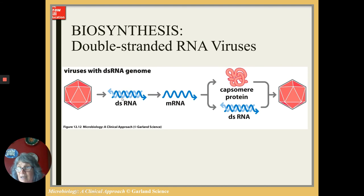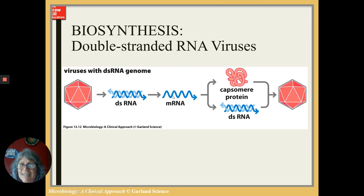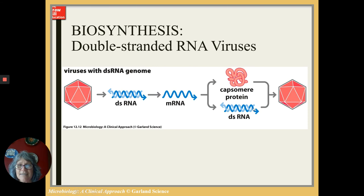For a double-stranded RNA virus, the positive strand is the equivalent of messenger RNA and the negative strand is the template. I use the messenger RNA (positive strand) to build capsomere proteins. Each strand serves as a template to build more of the other. The negative strand, even though it doesn't code for a protein, gives me a template to build more positive strand. I use the negative strand to build positive, and use the positive to build more negatives — needed to build more proteins and leave with virions. Those double strands come together in their protein coat, and what's released is the virion with exactly what the original came in with.